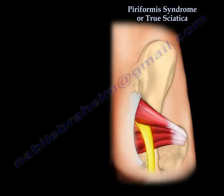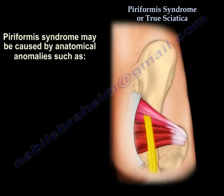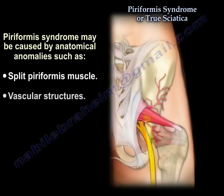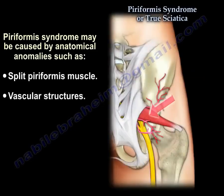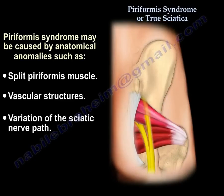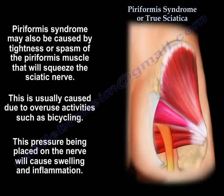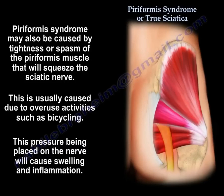What causes piriformis syndrome? Anatomic anomalies such as a split piriformis, vascular structures, or variation in the sciatic nerve path can be causes. Also, the syndrome can be caused by tightness or spasm of the piriformis muscle that squeezes the sciatic nerve — usually from overuse problems such as bicycling — where pressure on the nerve causes swelling and inflammation.